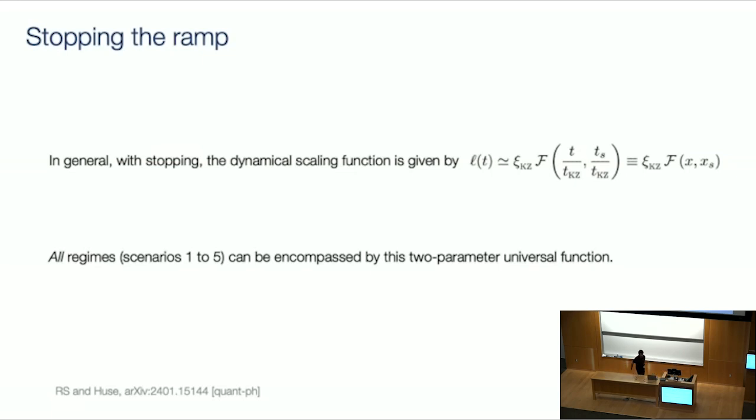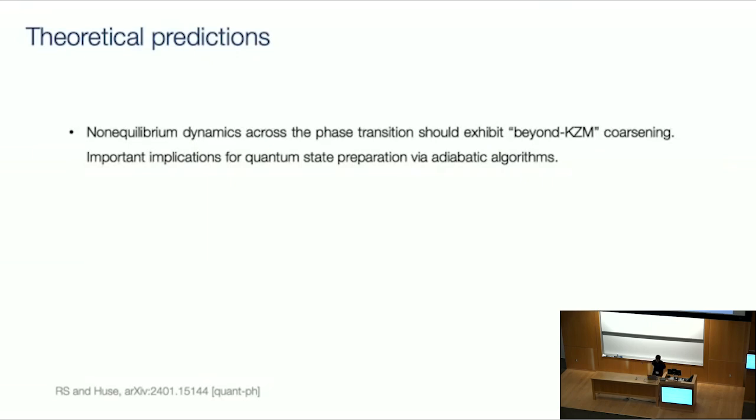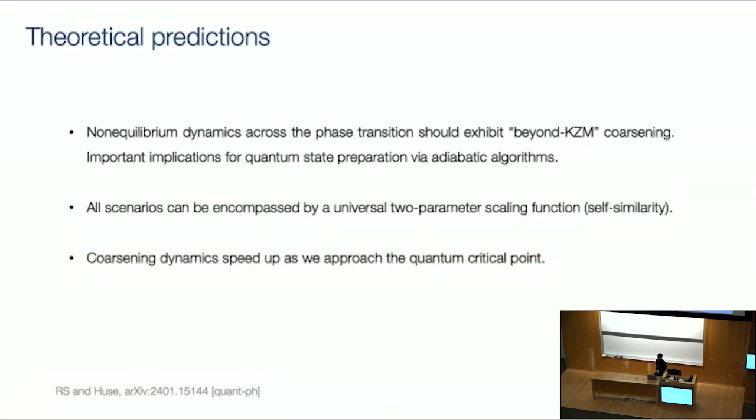All right. So that's enough theory, perhaps. But let me just summarize the key predictions of this theory. So, of course, there will be dynamics beyond Kibble-Zurek given by coarsening. These dynamics are universal, so they will exhibit self-similarity. What I haven't shown you, but I will show in experiments, is that the coarsening dynamics, this is a prediction of the theory, they actually get faster as we approach the quantum critical point. And also, if you look at the microscopics of what's going on, you can see that these dynamics are actually being driven by domain wall curvature.